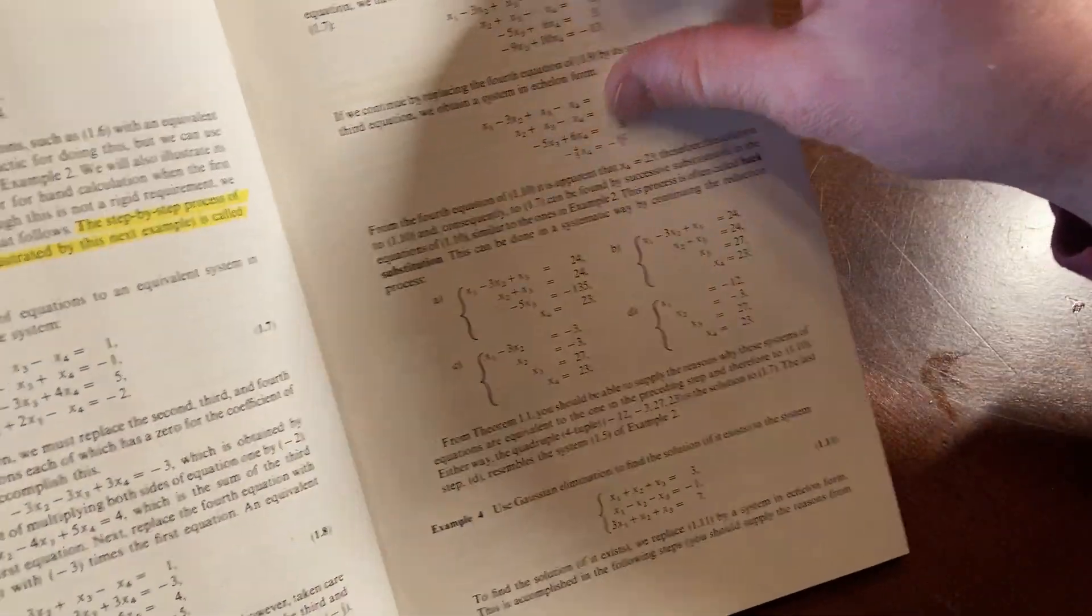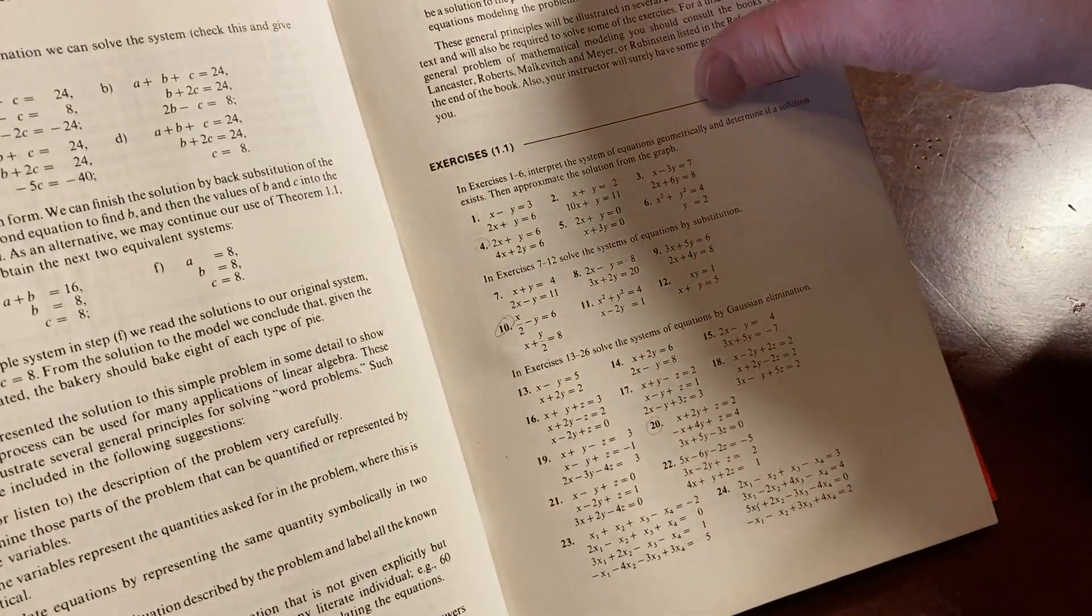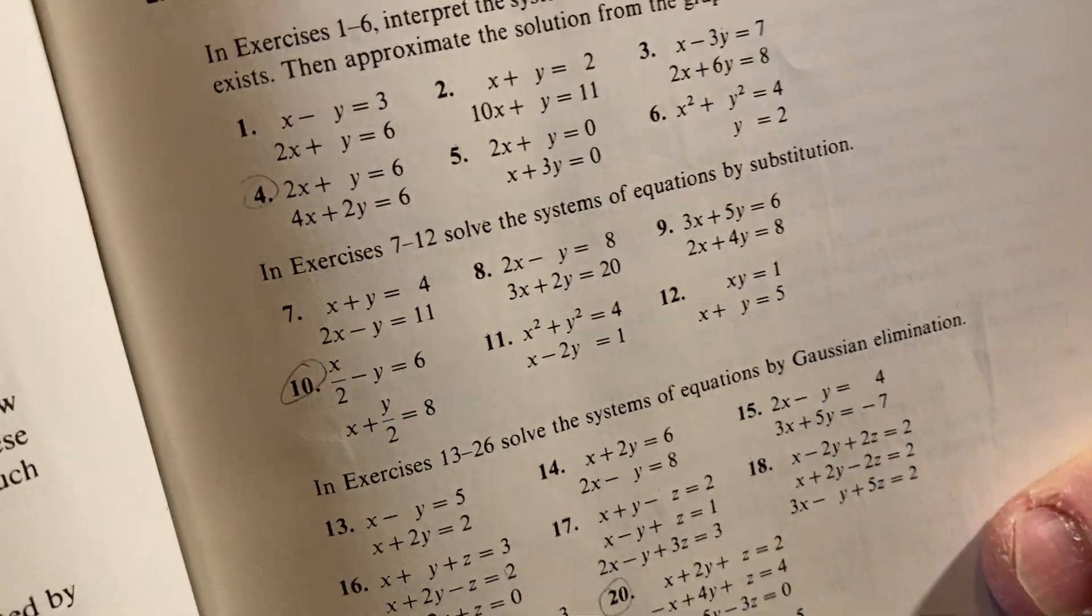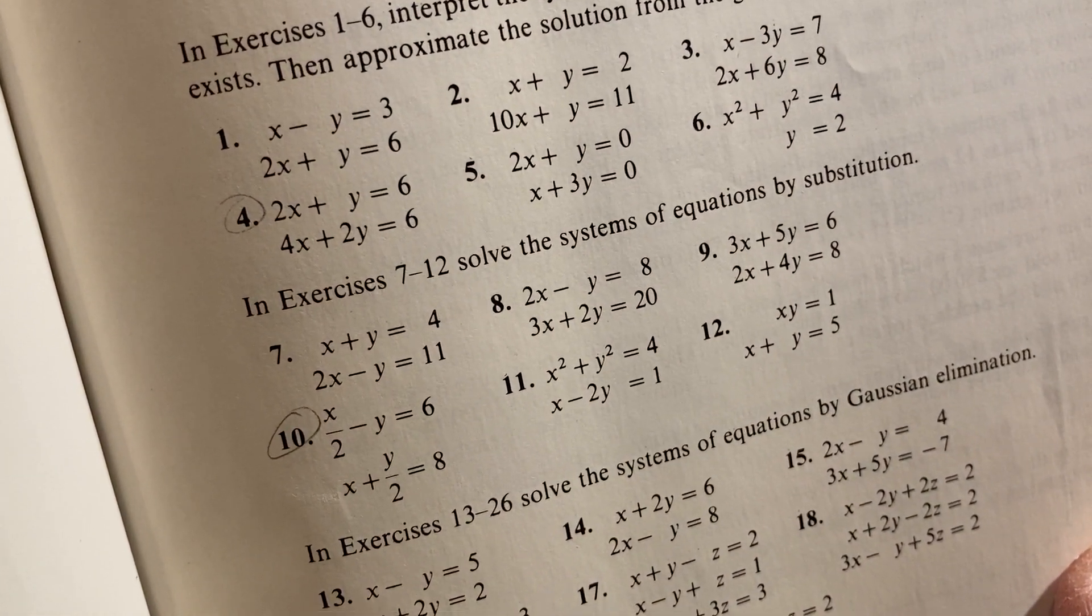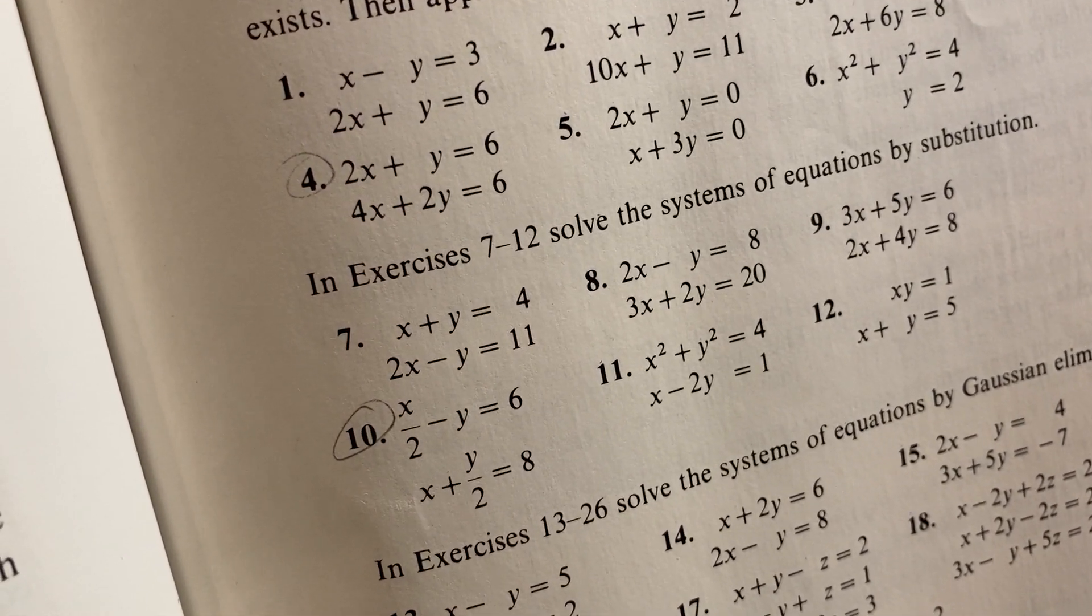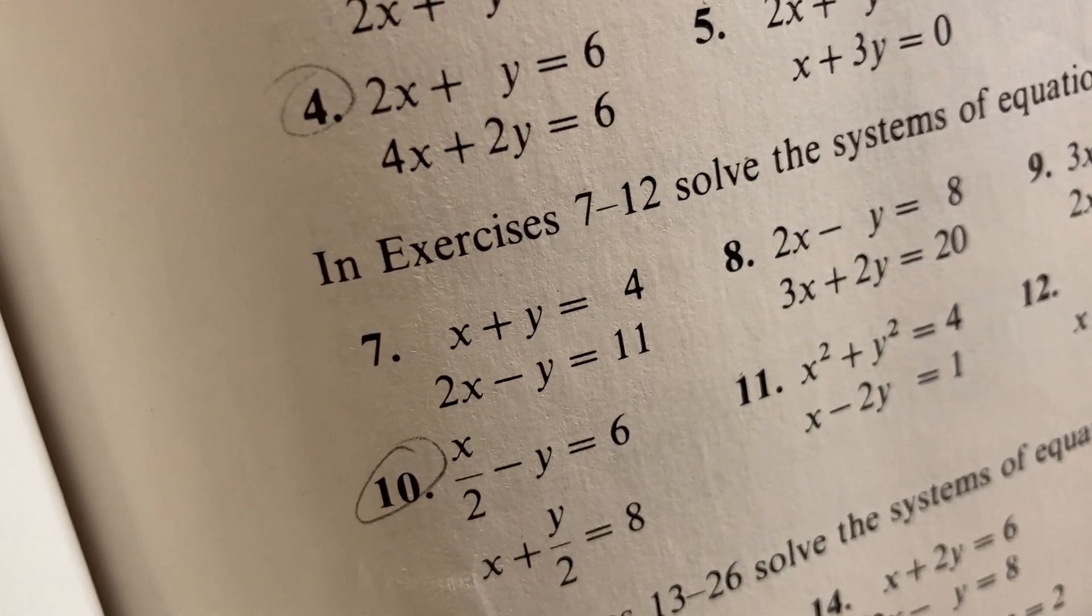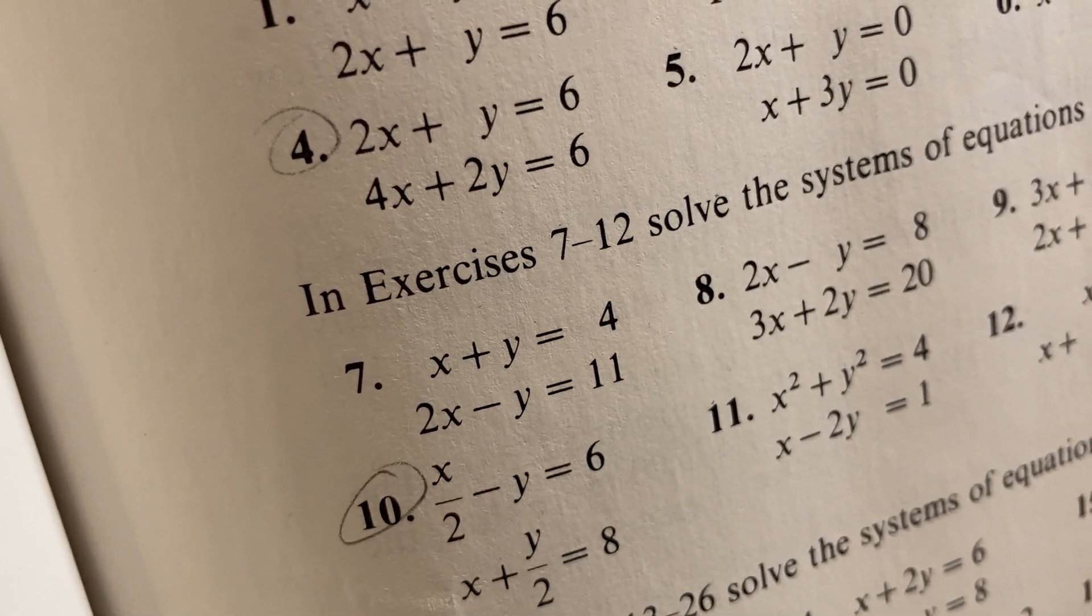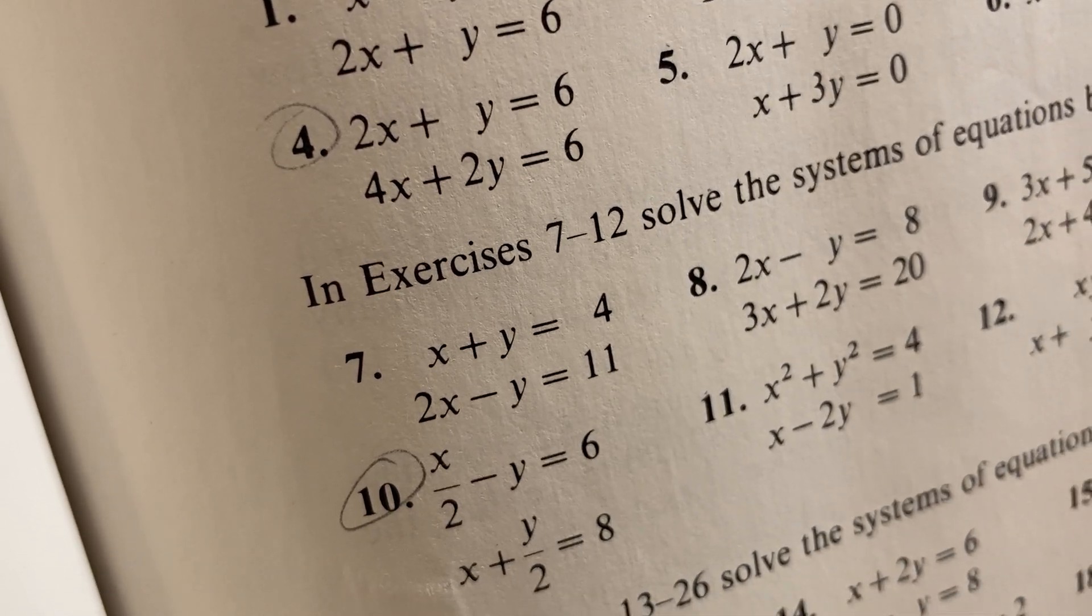They go through and then they try to generalize everything here. Talk about echelon form. I took a highlighter to the book. That was not me. Nice. So you could work these out. You could probably do some of these. Like number seven, solve the systems of equations by substitution. So that's one that I think a lot of people could do, although it's probably easier with addition. You can just add x plus y equals four, 2x minus y equals 11, right? Just adding, you would get 3x equals 15. So x is 5. Yeah, it's pretty cool.